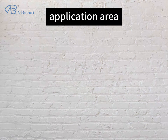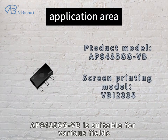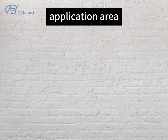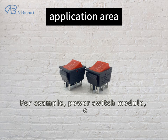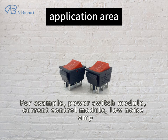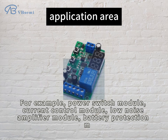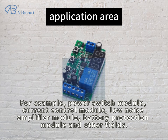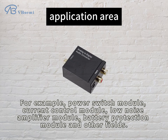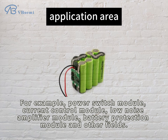Application Area: The AP935-GGVB is suitable for various fields, for example, Power Switch Module, Current Control Module, Low Noise Amplifier Module, Battery Protection Module, and other fields.